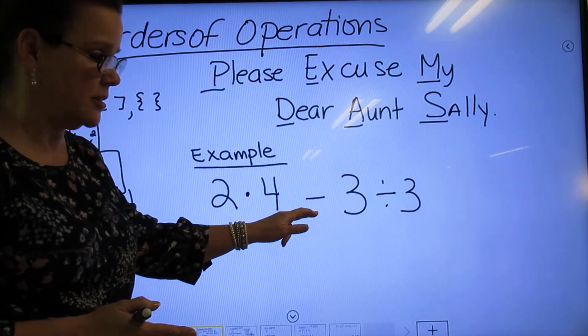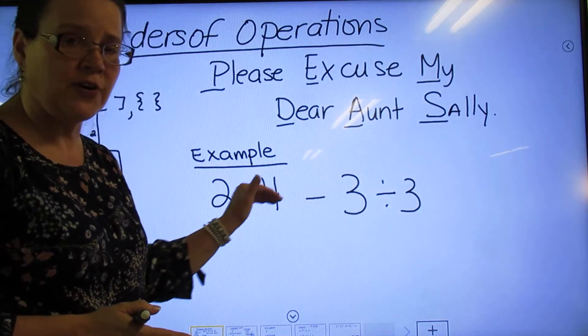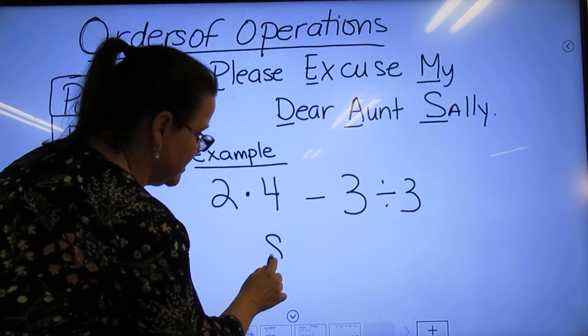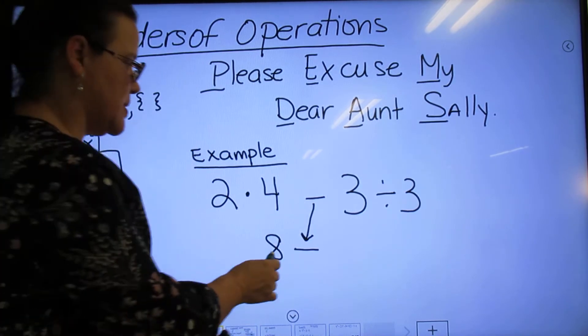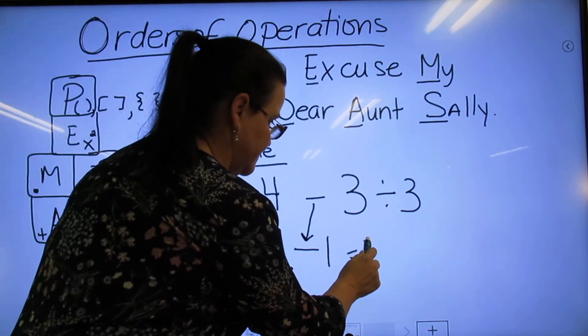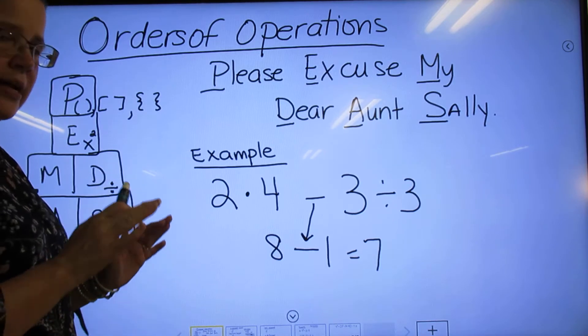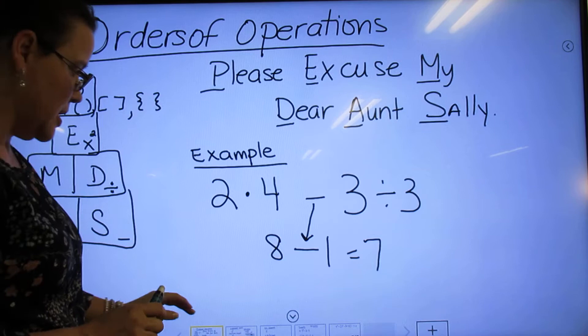So 2×4 is 8, bring that sign down, and 3÷3 is 1, and 8-1 is 7. It's as simple as that. Don't make it complicated. Try to follow those rules though. You've got to follow an order, and I'll show you why.